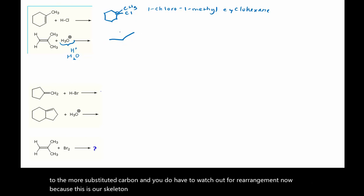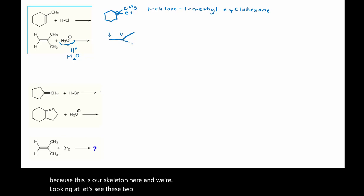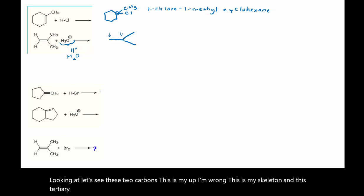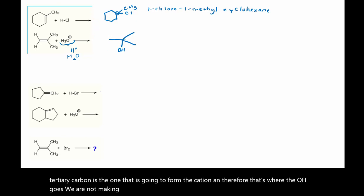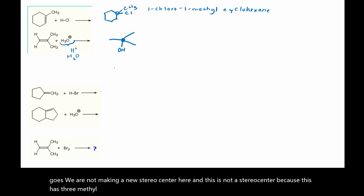This tertiary carbon is the one that is going to form the cation, and therefore that's where the OH goes. We are not making a new stereocenter here. This is not a stereocenter because it has three methyl groups, not four different groups. So you could call this — 1, 2, 3, 4 — this could be tert-butanol.